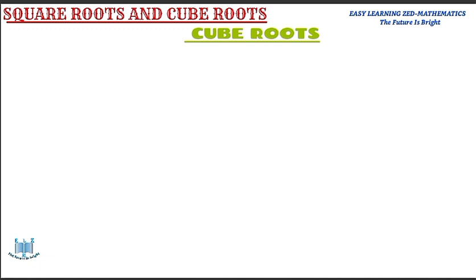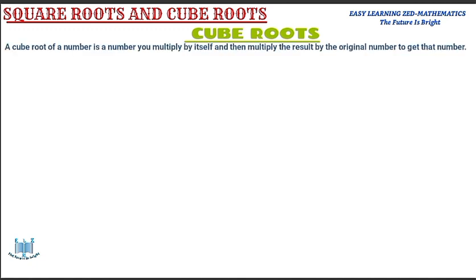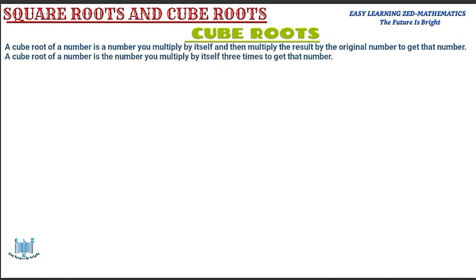Let me start by defining what a cube root is. A cube root of a number is the number you multiply by itself and then multiply the result by the original number to get that number. In other words, a cube root is the number you multiply by itself three times to get that number.